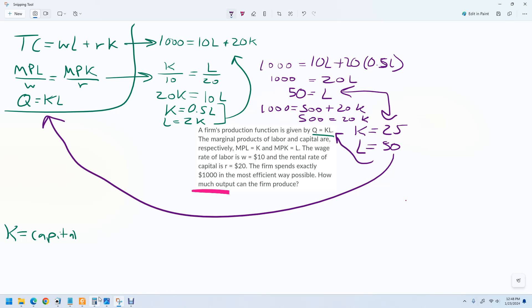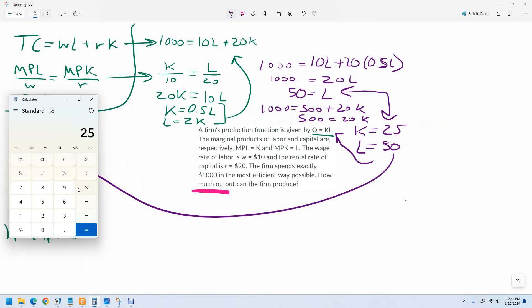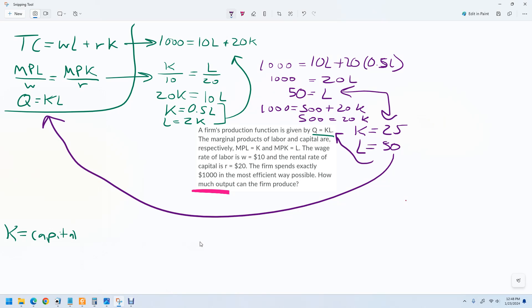So 25 times 50, and that is 1,250. So that is the answer. 1,250 is the number of units that this firm could produce when they use the least cost method given that production function.